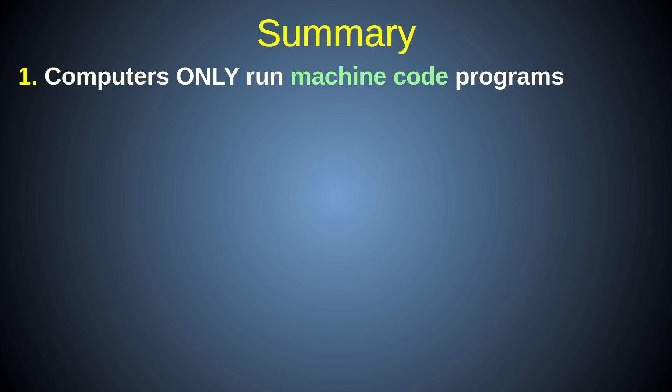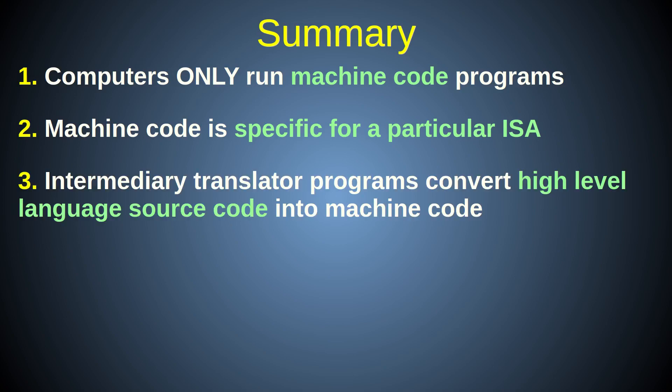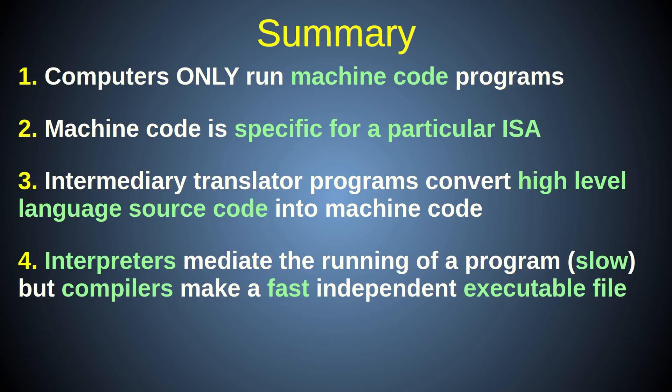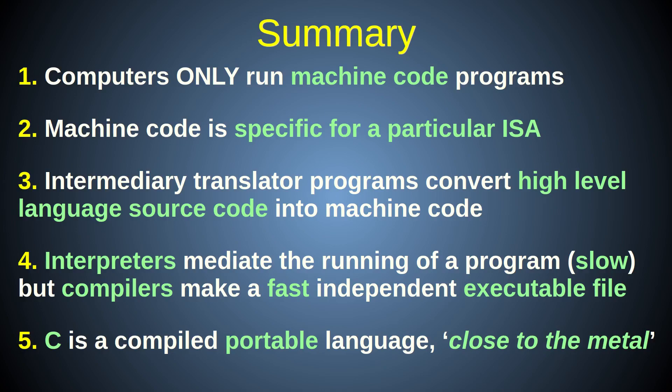In summary: 1. Computers only run programs that are represented in machine code stored in the computer's memory. 2. The machine code language is not portable across different computer types, and it takes a lot of specialist computer knowledge to read and write programs directly in machine code. 3. Intermediary programs called compilers and interpreters solve these problems by translating programs written in a more human-friendly language, the source code, into machine code. Those human-friendly programming languages are called high-level programming languages. 4. Interpreters translate and execute the source code program one small part at a time, but compilers convert the whole source code program into a machine code executable file that can run on its own. For this reason, a compiled program can run faster because it lacks the to-and-fro interpreter overheads. 5. The C programming language is a high-level language that is compiled and relatively close to the metal compared to other high-level languages while still being portable and easy to use.